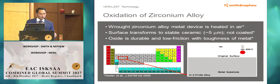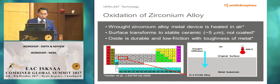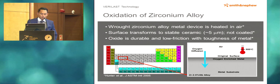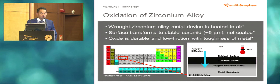What is the process of developing Oxinium? It's a wrought zirconium alloy that is heated in air. The surface transforms to a stable ceramic. Smith & Nephew will tell you that they don't like to use the 'coated' terminology — the surface actually transforms, so it's not a ceramic coating — a very important distinction. Oxygen is diffused on the original surface, becoming a stable ceramic, and you get a uniform ceramic oxide layer that is durable and low friction, with the toughness of metal.